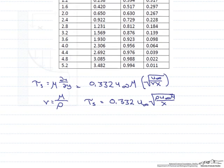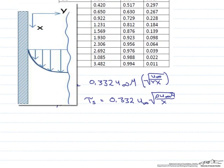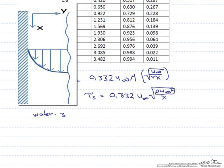Let's take a look at a particular situation. We consider water at 300 kelvin with a free stream velocity of 2 meters per second. And what we want to do is find out what the shear stress is at the wall as we go down the plate, or as a function of x.